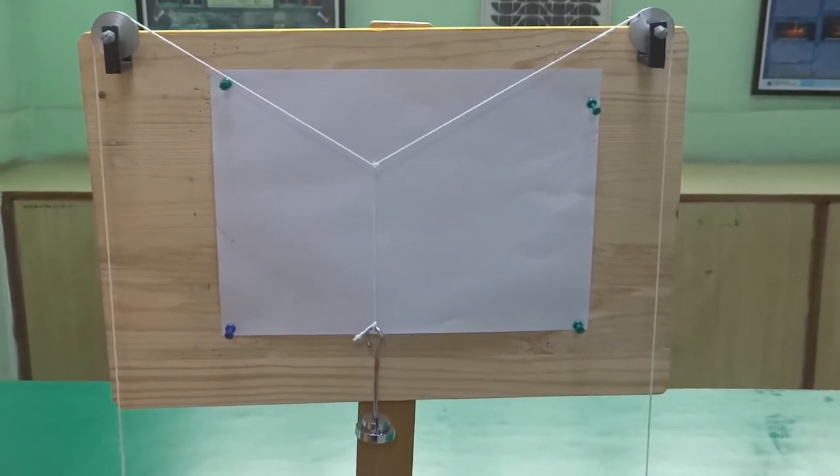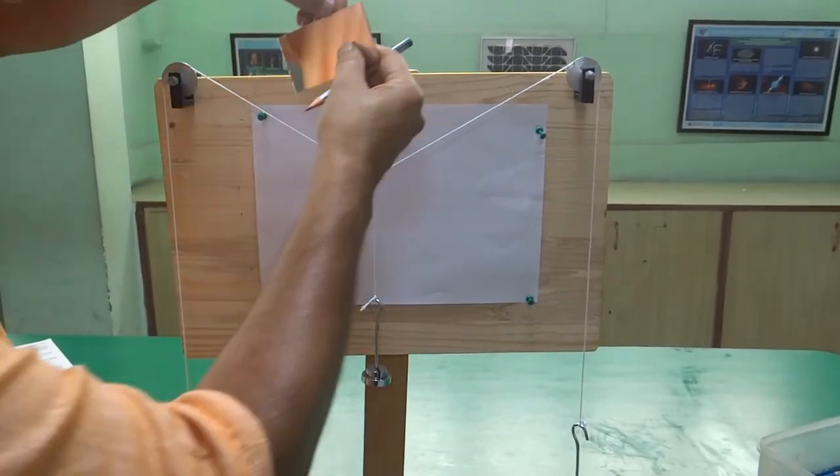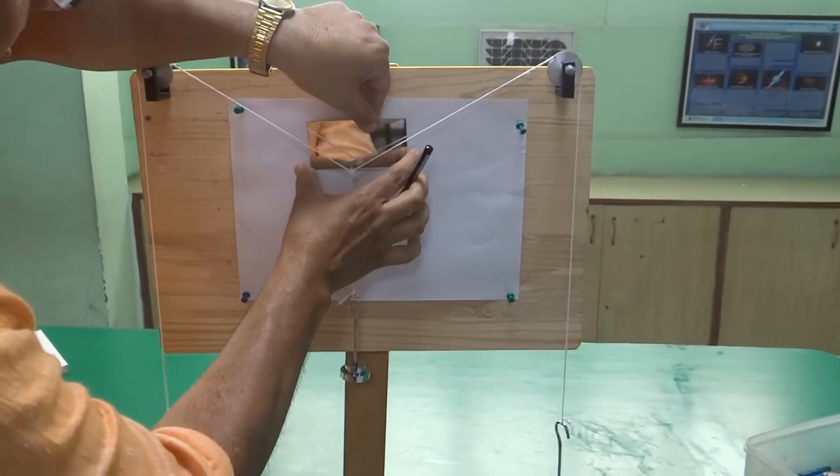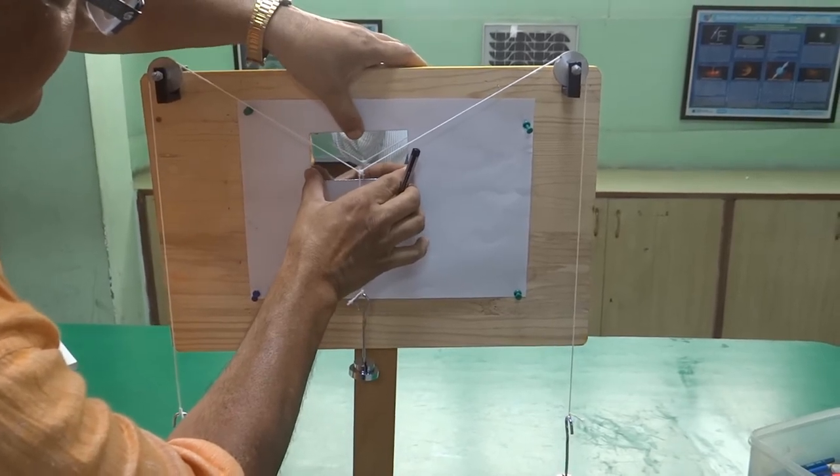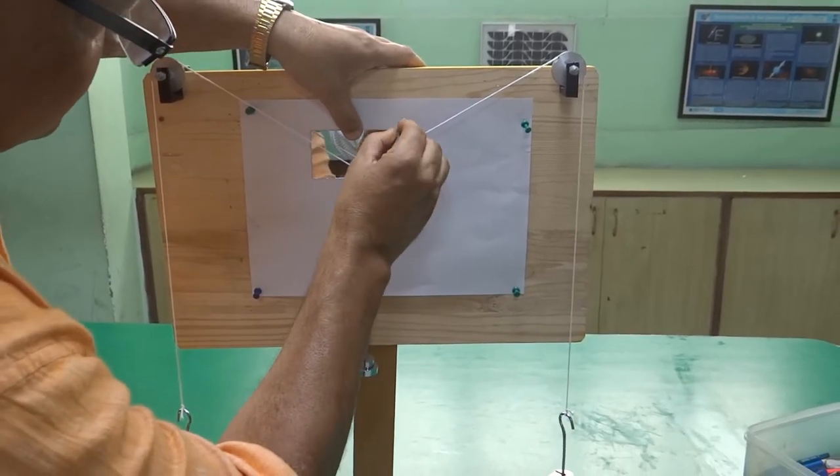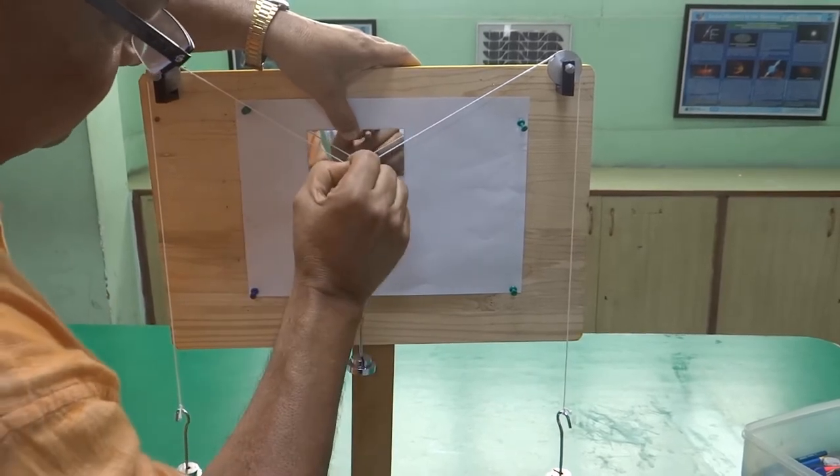Now you have to proceed. How to proceed? Place a mirror strip to identify the direction of the forces clearly. Keep it at the center. Mark, look at straight on this mirror.